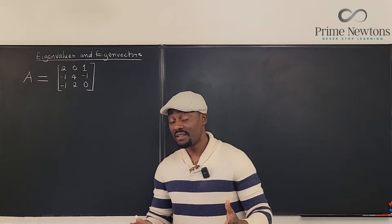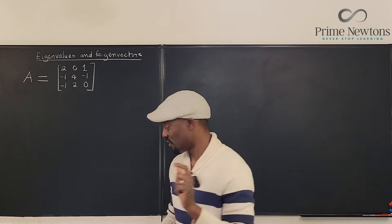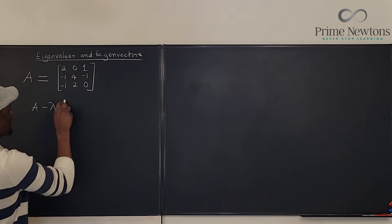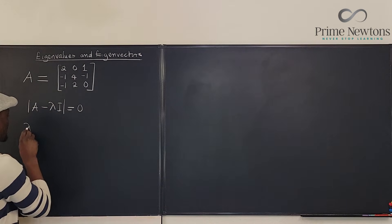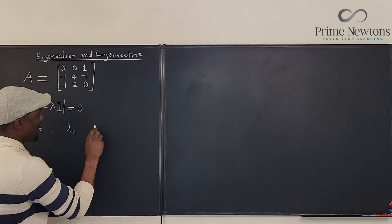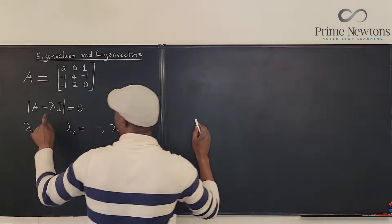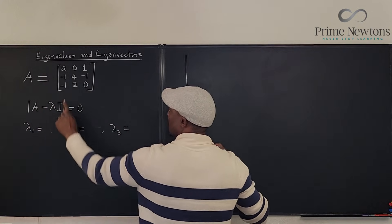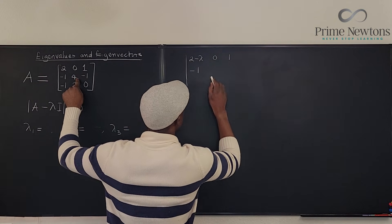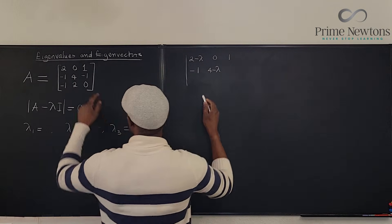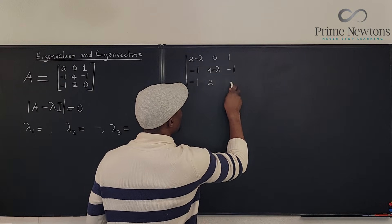Our first move is to find the eigenvalues. We just need to know that the determinant of A minus lambda·I equals zero. We're going to have lambda 1, lambda 2, and lambda 3. Let's take this determinant. Remember, we're subtracting lambda along the main diagonal, so we get 2 minus lambda, 0, 1, then minus 1, 4 minus lambda, minus 1, and minus 1, 2, minus lambda.